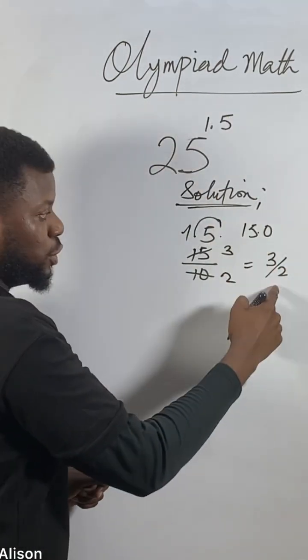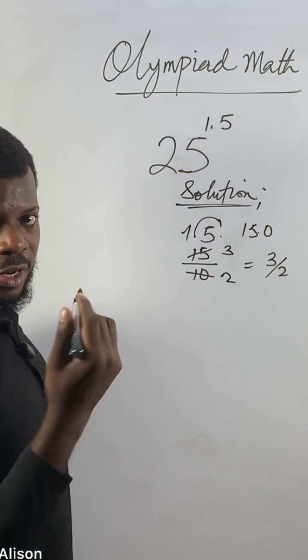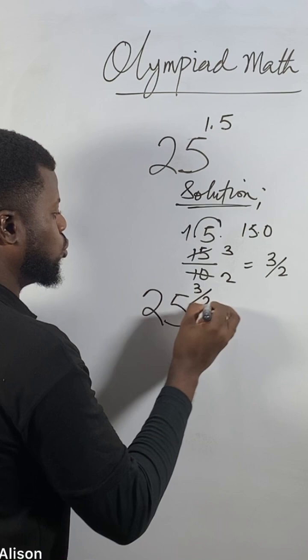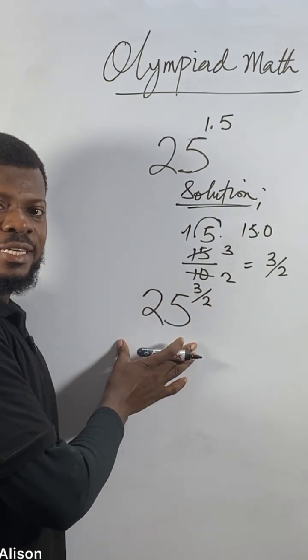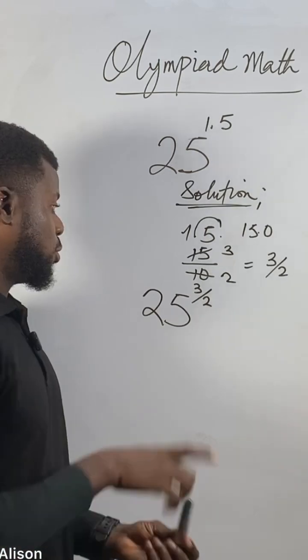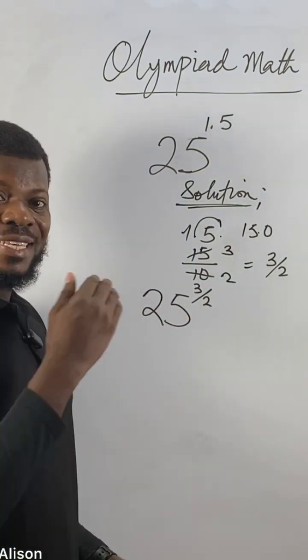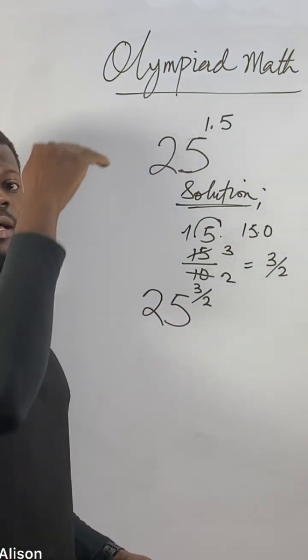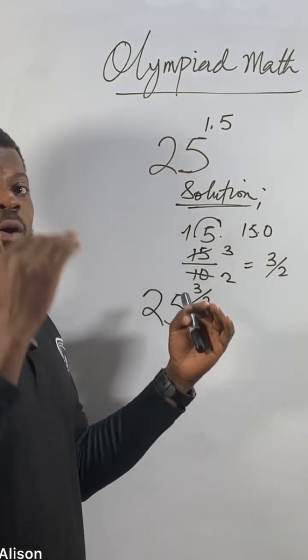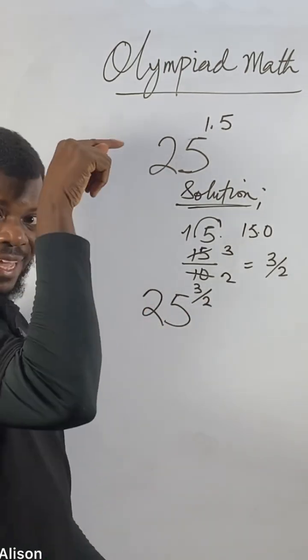Now you change to 3 over 2. So we get 25 to the power of 3 over 2. This comes from indices. They're called a fractional index because 3 over 2 is a fraction. Index, power, exponent - anything up here we call index or power or exponent.